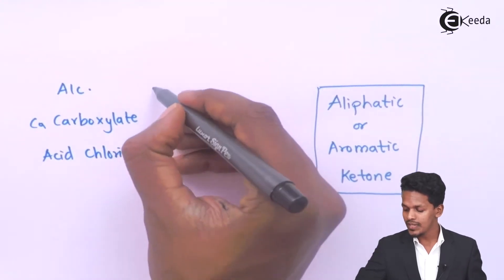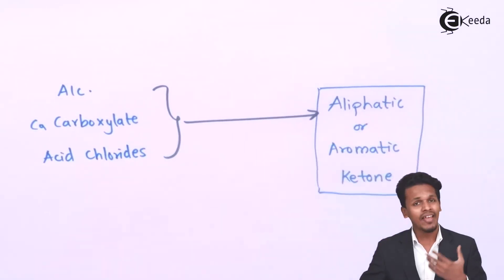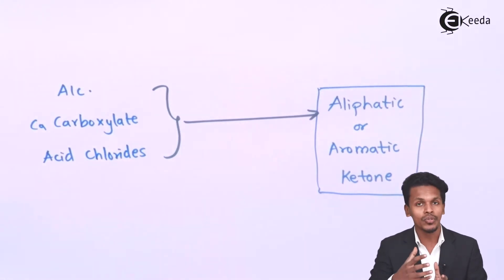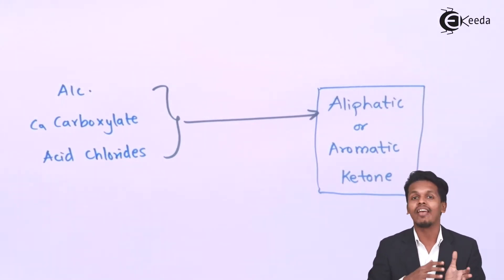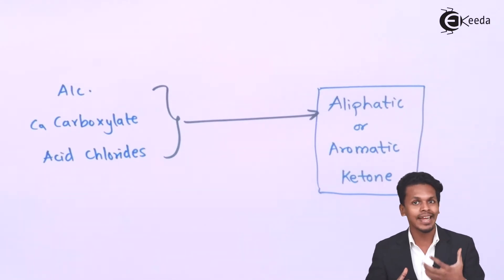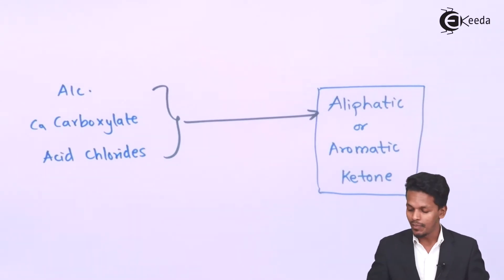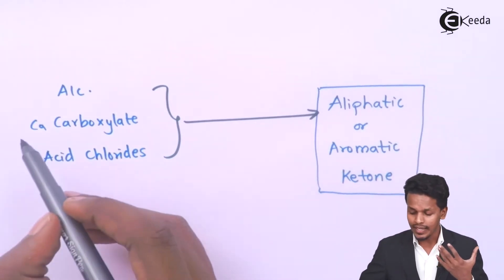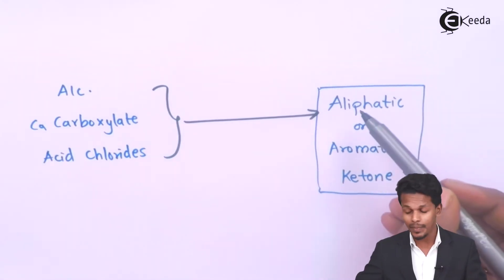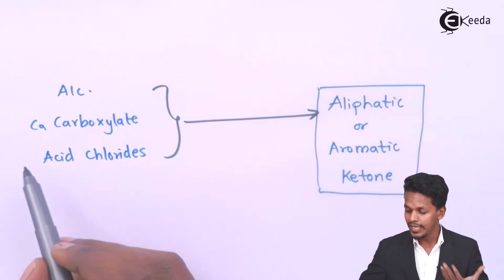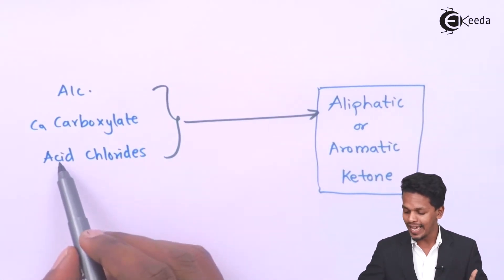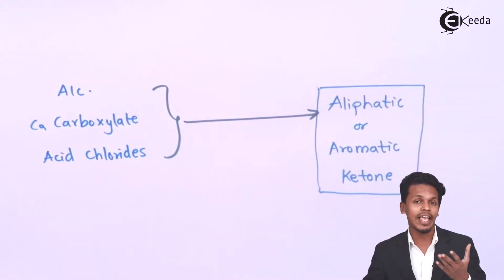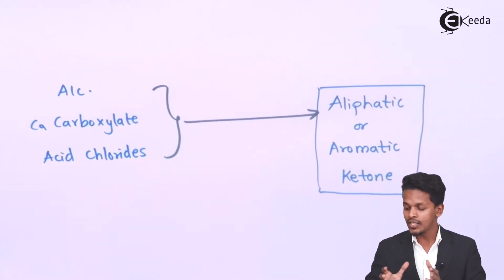Each of these reactions will be covered in detail in the next topic, with a separate discussion for each reaction. By using alcohols we can prepare either aliphatic or aromatic ketones; by using calcium carboxylates we can prepare aliphatic or aromatic ketones; and by using acid chlorides we can also prepare aliphatic as well as aromatic ketones.